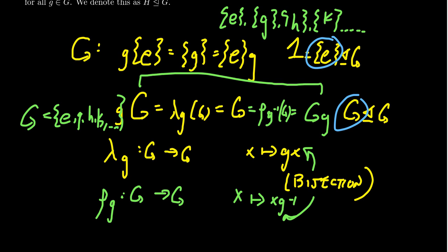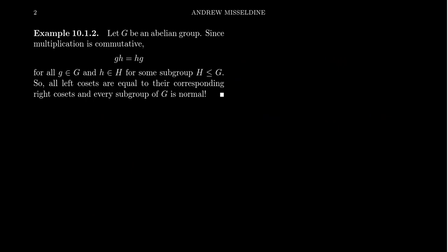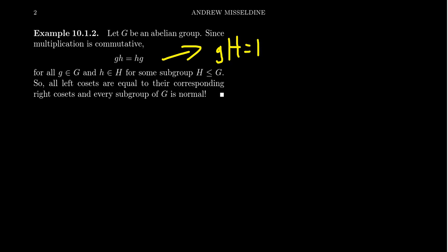For different types of groups, we want to know what other normal subgroups are available — what are the non-trivial proper normal subgroups? When it comes to abelian groups, this conversation is kind of a moot point, because if you have an abelian group, that means your operation — what's called multiplication — is commutative. So for every pair of elements, g times h is equal to h times g. Since elements commute, this is going to imply that gH is equal to Hg for all g inside of G.